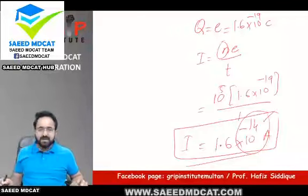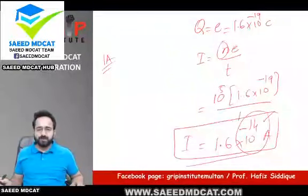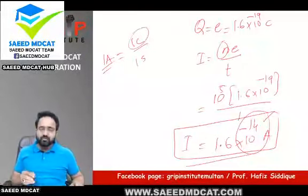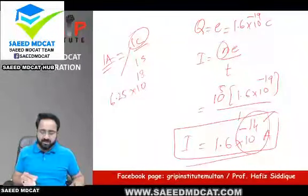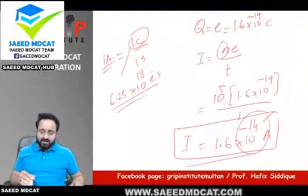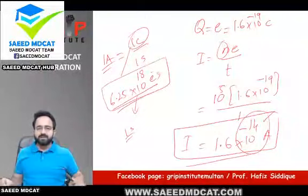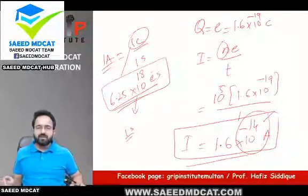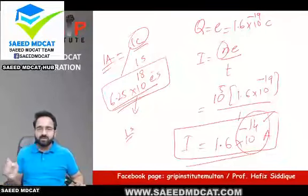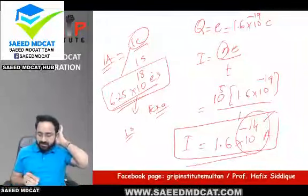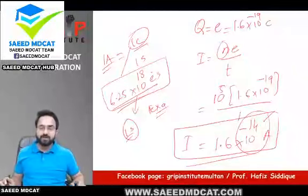So if you want 1 Ampere current — what will happen? Consider this: for 1 Ampere current, you need 1 Coulomb per second. Do you know 1 Coulomb of charge = 6.25 × 10^18 electrons. Yaani itni badi tadaad agar ek second mein kisi wire mein se pass kare, tab 1 Ampere hoga — 1 Ampere current bahut bada current hai. Milli Ampere, micro Ampere bhi hum use karte hain — small units.